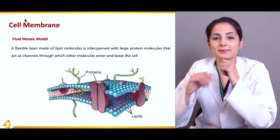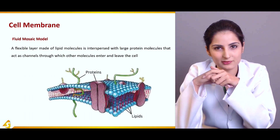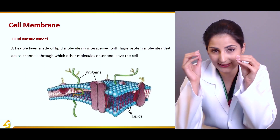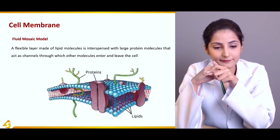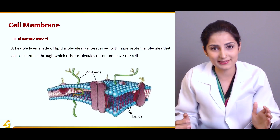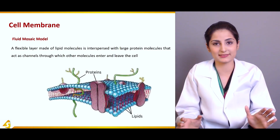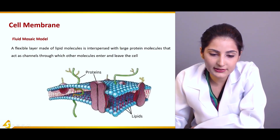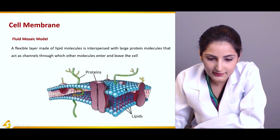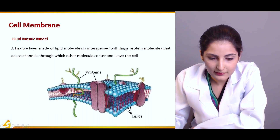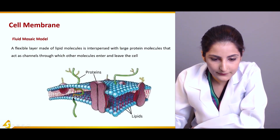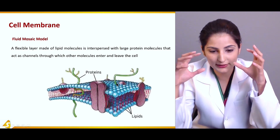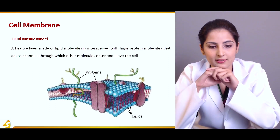Fluid means it is a flexible layer — not rigid or stiff, but flexible and fluid. There is fluidity inside the membrane. The mosaic is like a painting which has different kinds of colors and materials present inside, and this is exactly what happens in a cell membrane. As you can see in this 3D diagram, there are proteins, a lipid bilayer, cholesterol, and many molecules. It's like a multifunctional unit, and that is why it is known as a fluid mosaic model.